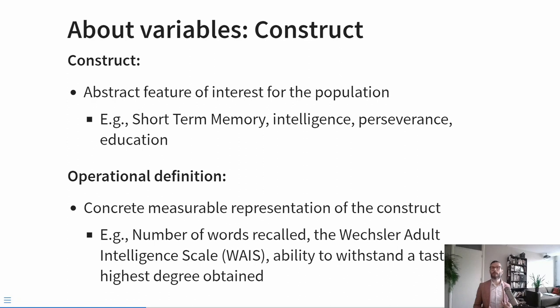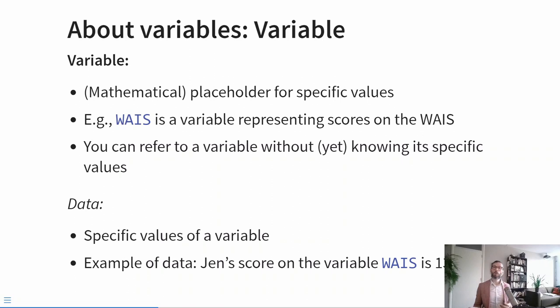For example, you could measure short-term memory by having participants do a word recall task, or measure intelligence using the validated Wechsler Adult Intelligence Scale, or measure education by asking people what's the highest degree they've received. Once we've defined our operational definition for each construct, we can measure people's values and record those values in what we call a variable. A variable is a mathematical placeholder for specific values — for example, 'WAIS' could be a variable representing individual scores on the Wechsler Adult Intelligence Scale.